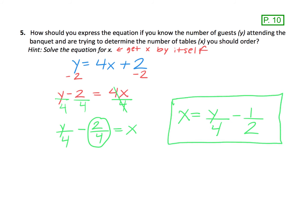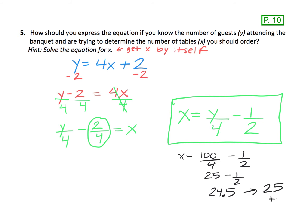I'm going to clean this up — putting x on the left side, then y divided by 4. And for 2 over 4, we can reduce that to 1 half. So the equation is x equals y divided by 4 minus 1 half. Now if I asked you how many tables would I need if 100 guests are attending, I could put 100 in for y: x equals 100 divided by 4 minus 1 half, which is 25 minus 1 half, that's 24 and 1 half. Obviously we can't have half a table, so if you need 24 and 1 half tables, you're going to need 25 tables for 100 guests.